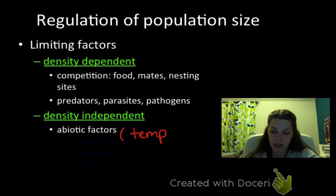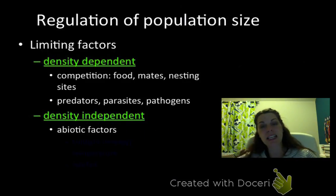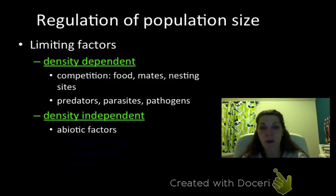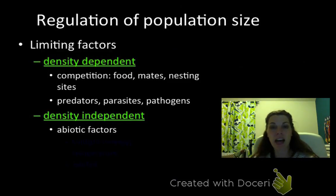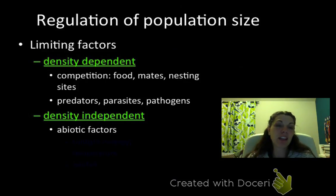Our limiting factors are going to be either density-dependent factors or density-independent factors. A density-dependent factor is something where the density of the population itself is causing the problem. So, competition for food — if I have a very high density in my population, competition for food, for mates, for nesting sites, that's all going to be really extreme. If my population is fairly low density, there's not going to be a lot of competition there.